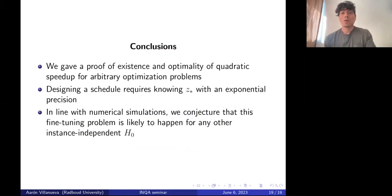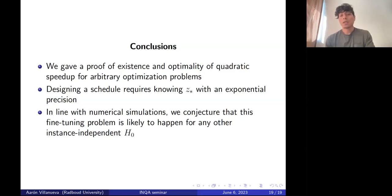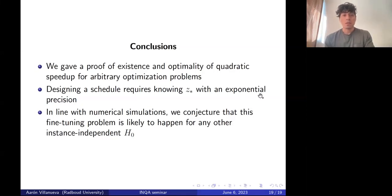As conclusions of this work: we gave a proof of existence and optimality of quadratic speedup for arbitrary optimization problems, but designing a schedule requires knowing the position of the minimal gap with exponential precision, making any practical implementation of this algorithm difficult. In line with numerical simulations, we conjecture that this fine-tuning problem is likely to happen for any other instance-independent mixing Hamiltonian. That is the end of the talk — thank you for listening.